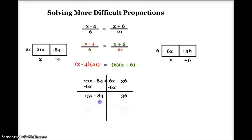Next, I'm going to add 84 to both sides of the equation. When I do that, on the left side of the equation, my 84 and negative 84 cancel each other out, and I'm just going to be left with 15x. On the right side of the equation, 36 and 84 is going to be equal to 120.